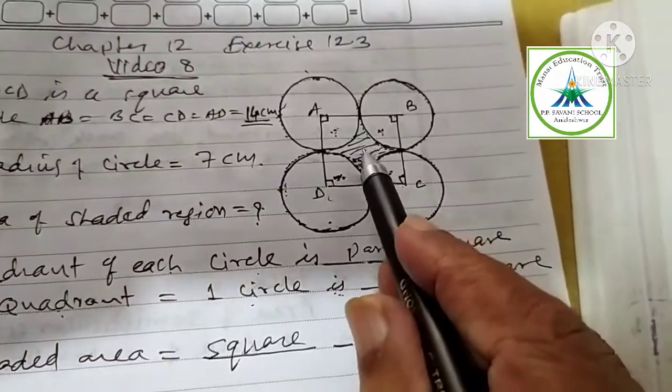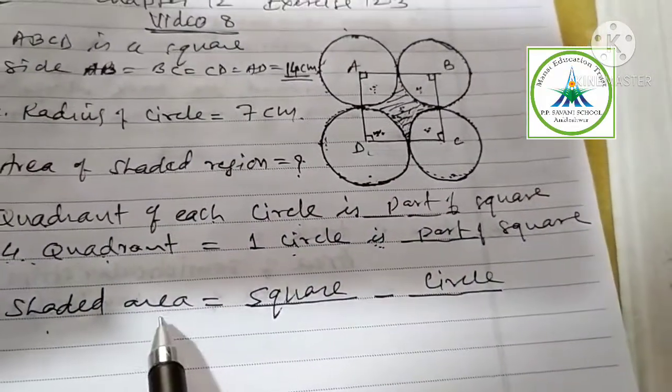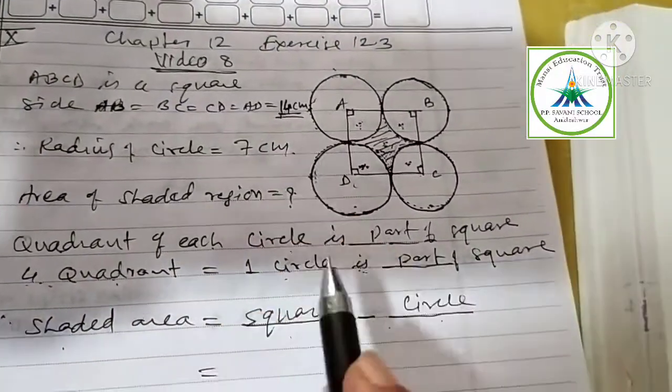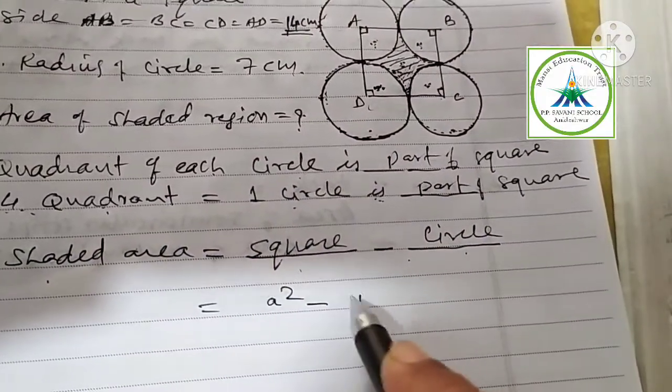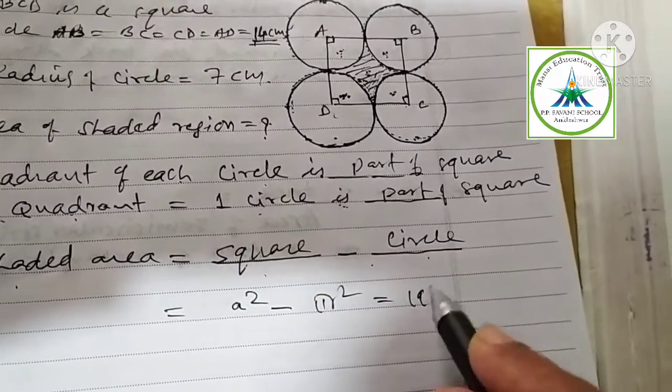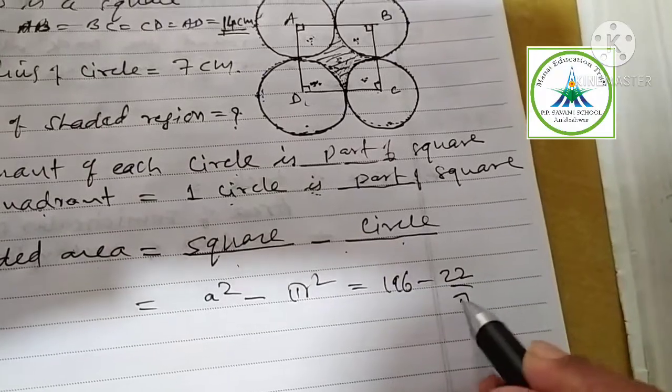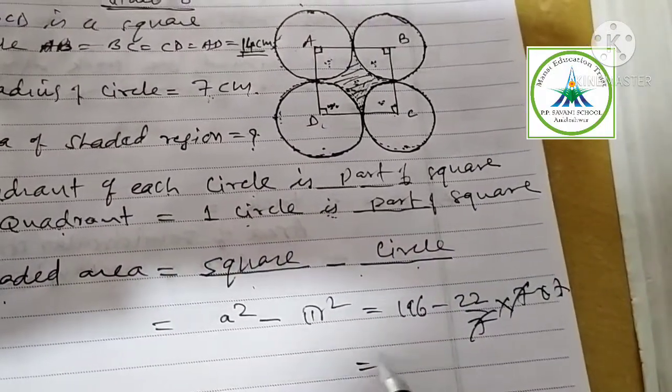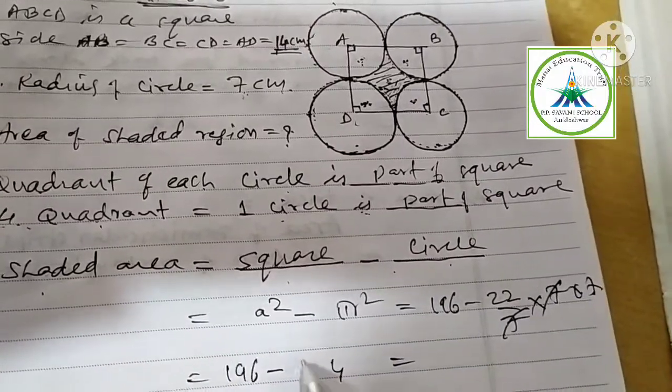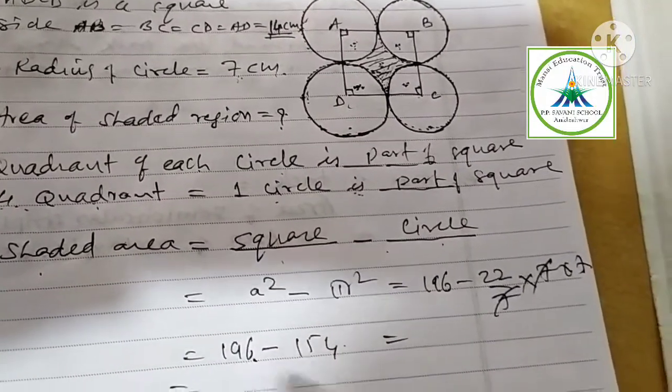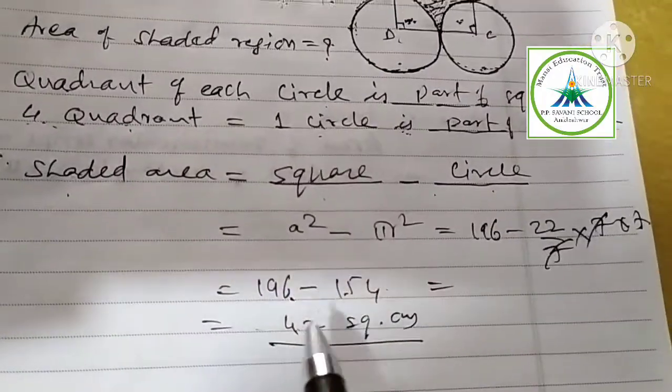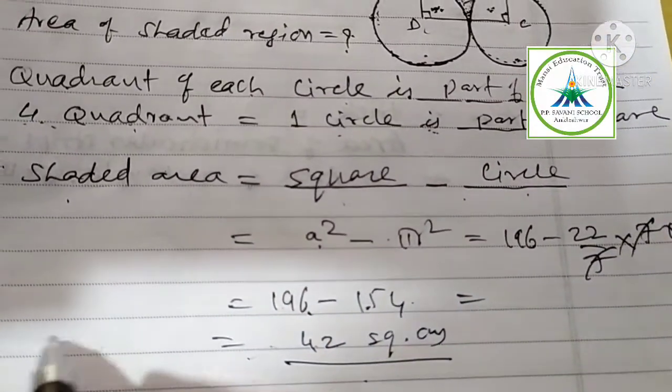Shaded area equal to square minus circle. Quadrant of each circle is part of square, there are four quadrants, makes one circle. Shaded part is equal to square minus circle. Simply put the formula: side square minus pi R square. That is equal to 14 square is 196, minus pi is 22 upon 7, radius is 7 centimeter. After cancellation, you are getting 196 minus 154. That is 42 square centimeter.